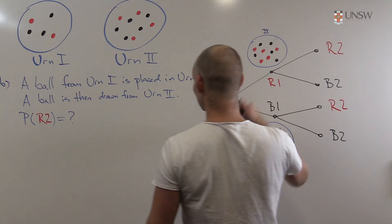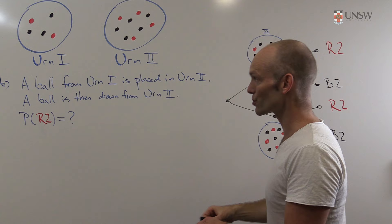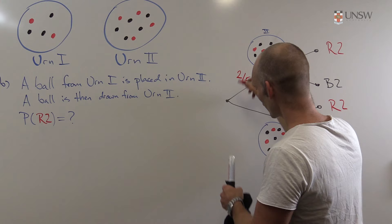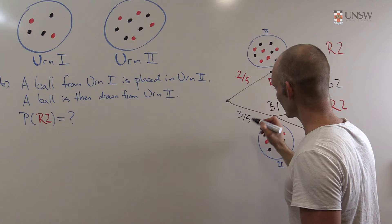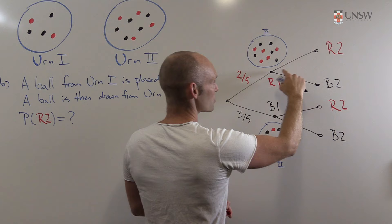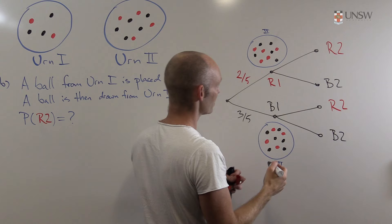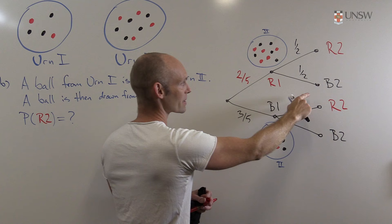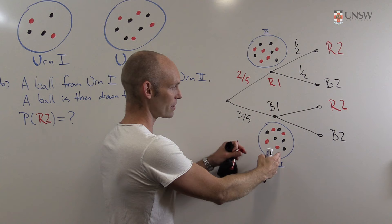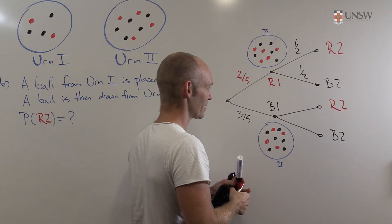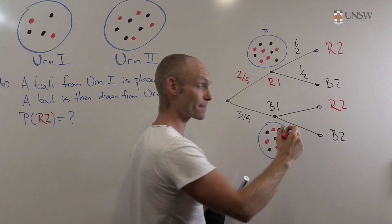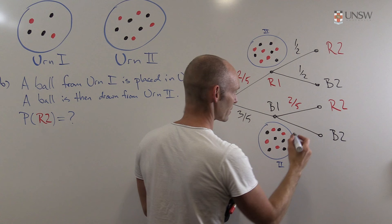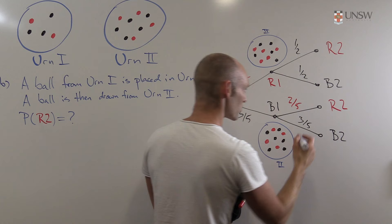The probabilities on the first draw: there's a 2/5 chance of drawing a red ball from urn one and a 3/5 chance of drawing black. In the scenario where we added a red ball to urn two, it has five red out of ten total, so the probability of drawing red from urn two is 5/10 = 1/2, and likewise 1/2 for black. In the other scenario, urn two has four red out of ten, giving a 4/10 = 2/5 probability of red and 3/5 for black.